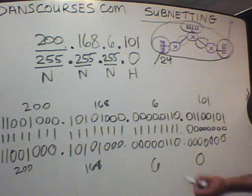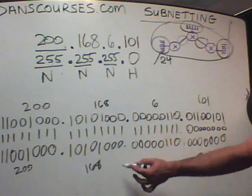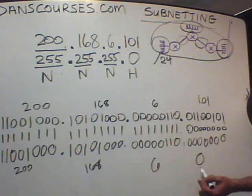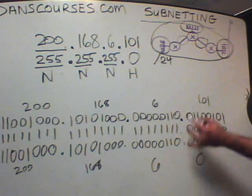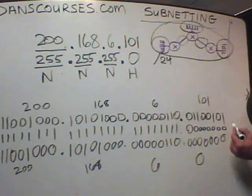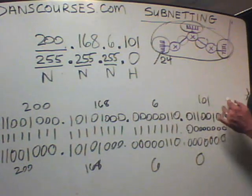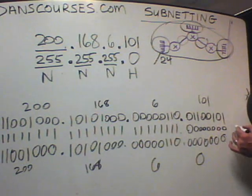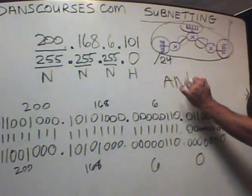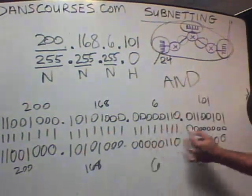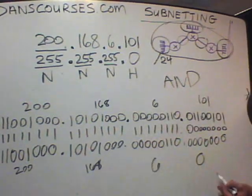So the network is 200.168.6.0. That is the network, and that's how the router figures out — from the IP address, ANDed with the netmask — how it finds the network.